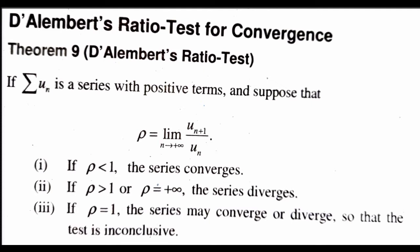If sigma u_n is a series with positive terms and suppose that rho equals the limit as n tends to infinity of u_(n+1) divided by u_n, then there are three conditions. The first one is: if rho is less than 1, then the series converges.